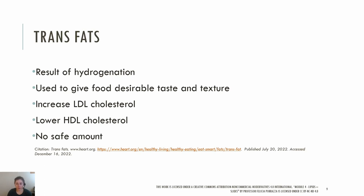Trans fats are made when liquid oils are turned into solid fats, which are called partially hydrogenated oils. There are naturally occurring trans fats produced in the gut of some animals, but artificial trans fats, or trans fatty acids, are those created in a process where hydrogen is added to liquid vegetable oils, which makes them more solid. Hydrogenation — the process of adding hydrogen to the carbon-carbon double bonds — creates both saturated and trans fatty acids. Trans fats were used in the food supply to give food a more desirable taste and texture, and they allow oils to be more stable and less likely to go rancid.